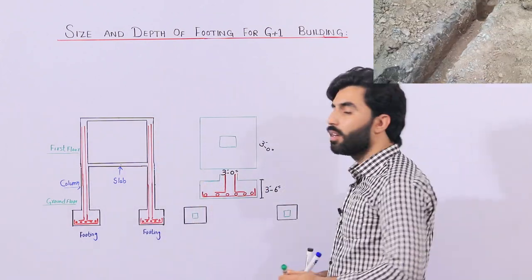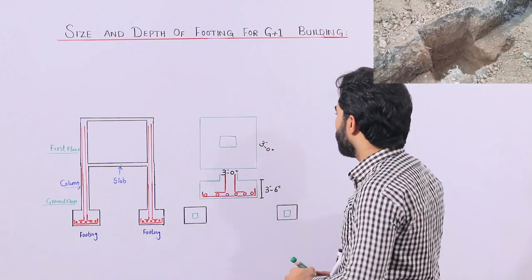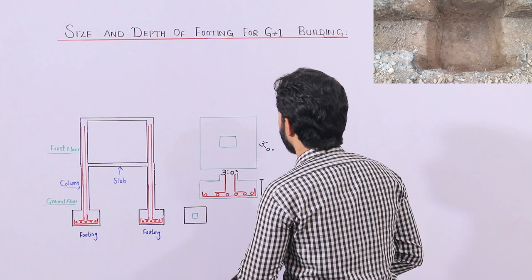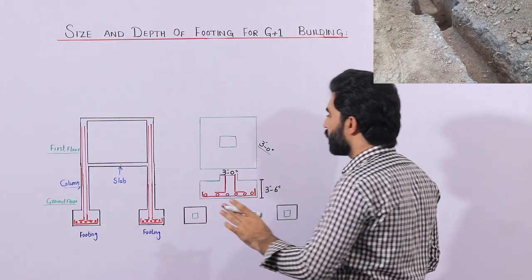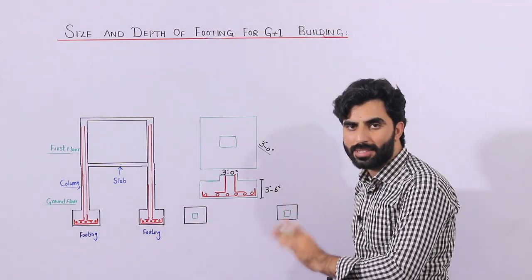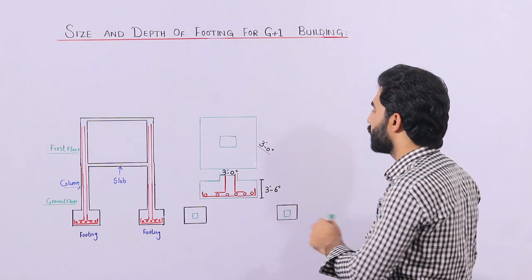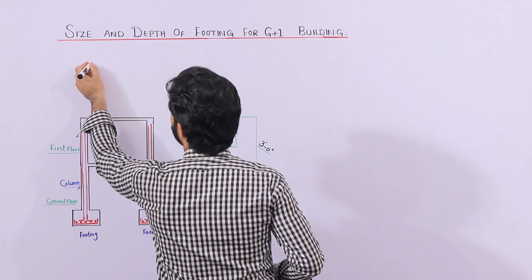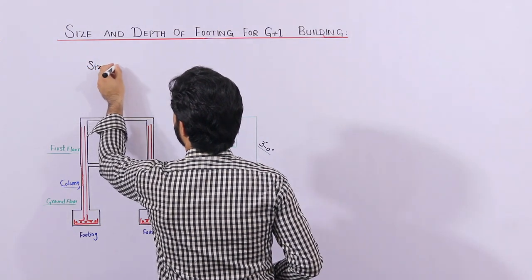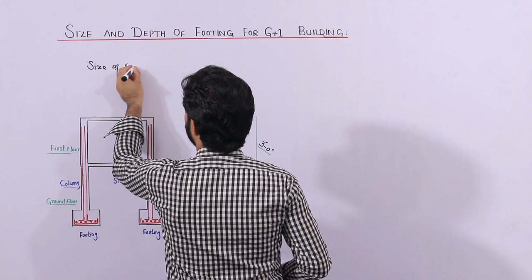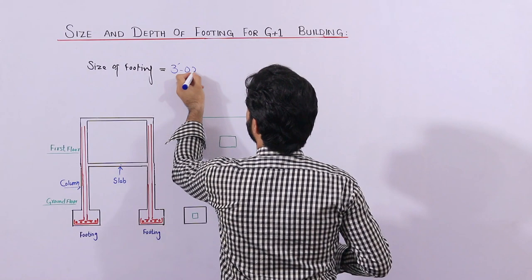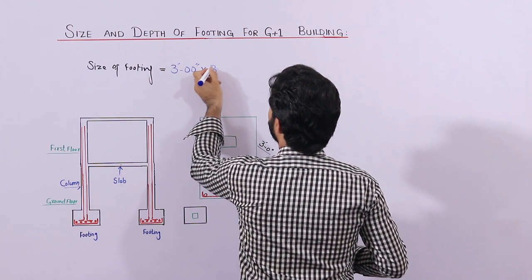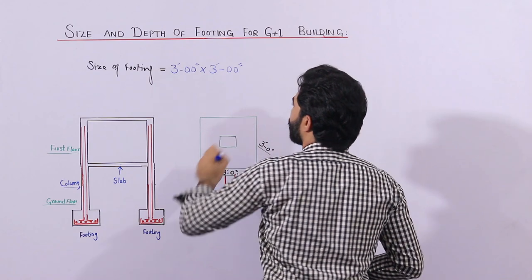So what should be the size of footing? For individual footing, remember: for G+1 story, the size of the footing should not be less than 3 feet by 3 feet. This is a square footing. The size is 3 feet 0 inches by 3 feet 0 inches — it should not be less than this for G+1 story.